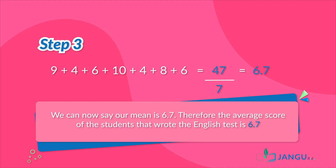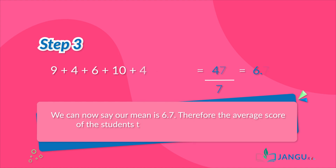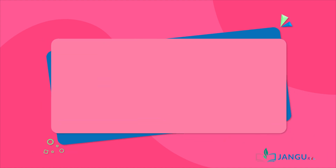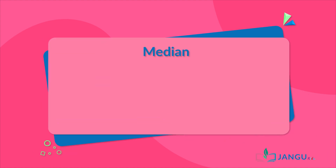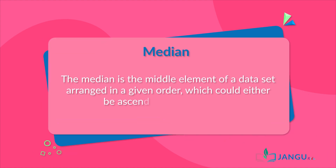We can now say that our mean is 6.7, which means the average score of the students that wrote the English test is 6.7. The next mathematical tool for data description and presentation we will discuss is median.